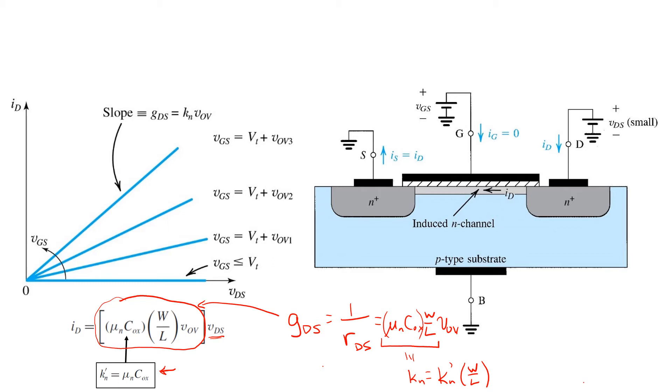This mode of operation where the drain current is linearly related to a small value of VDS applied and with the channel region inverted is called triode operation. And in triode, a MOSFET behaves very much like a resistor whose value is under the control of the gate overdrive voltage.